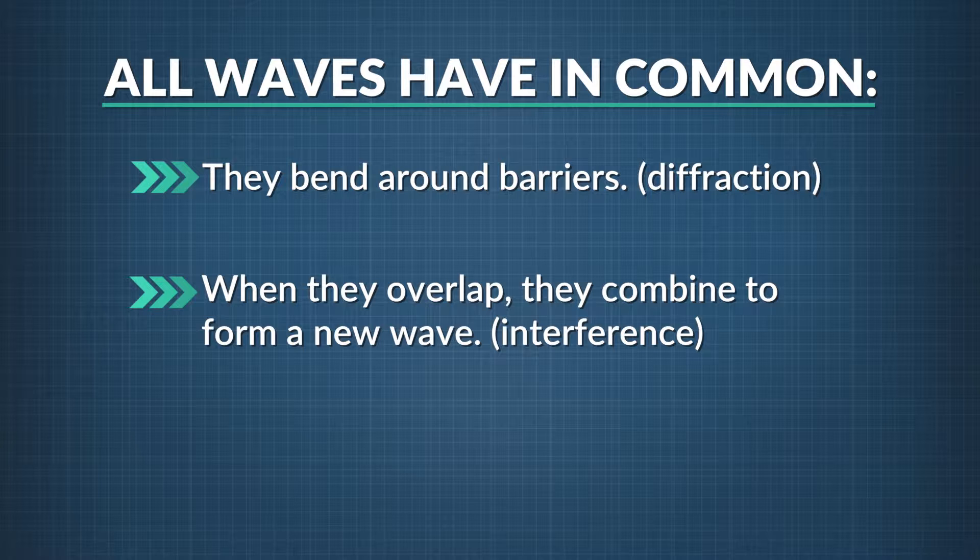When a wave bends around a barrier, that's called diffraction. And when waves mix together, that's called interference. All waves can diffract and interfere.